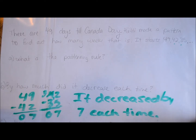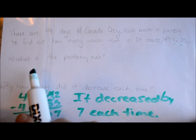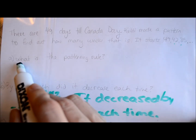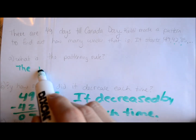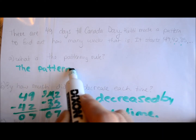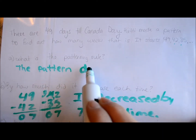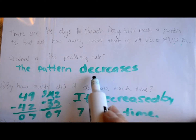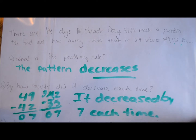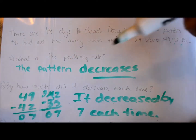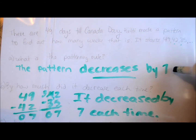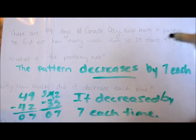Now for question A: what is the patterning rule? The pattern decreases — you have to have the word decreases or increases in the patterning rule. So this one is: the pattern decreases by 7 each time.